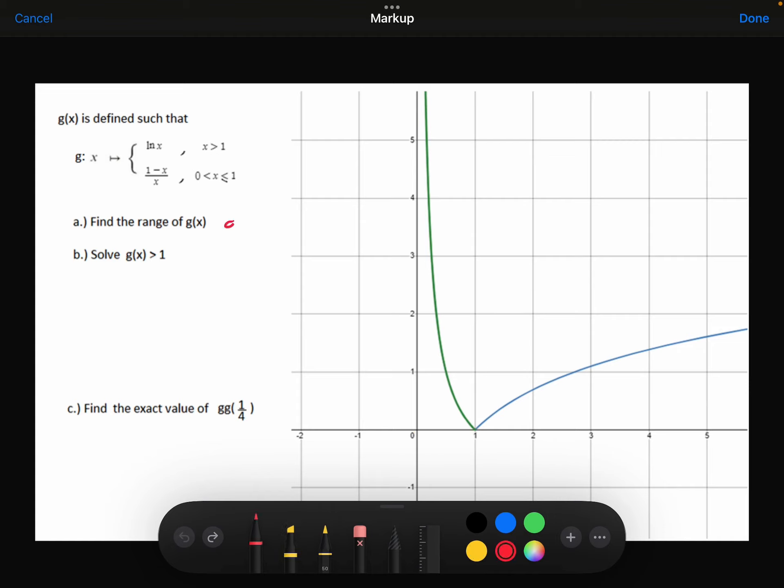So the range then is simply G of x is greater than or equal to, it can equal 1, can equal 0, sorry, at this point here. So the range is G of x is greater than or equal to 0.